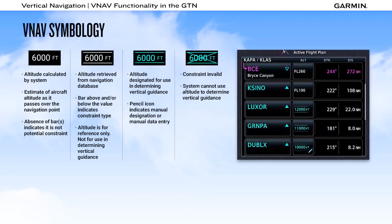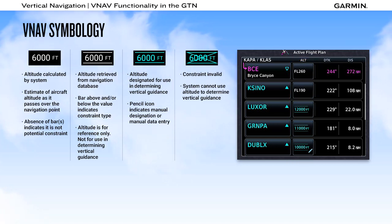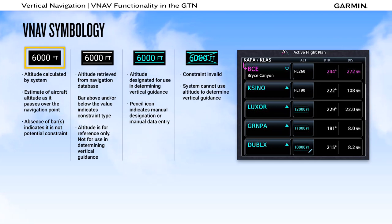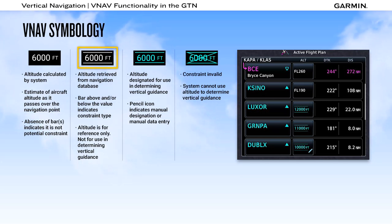On the GTN active flight plan page, you will see altitudes depicted in either white or cyan font, and some altitudes may have lines above, below, or both above and below the number. An altitude displayed in white with no lines is an altitude calculated by the system, providing an estimate of your altitude as you pass over a waypoint. If the white altitude has lines above or below, it is an altitude constraint pulled from the navigation database, but is for reference only — these are not used in determining VNAV guidance.